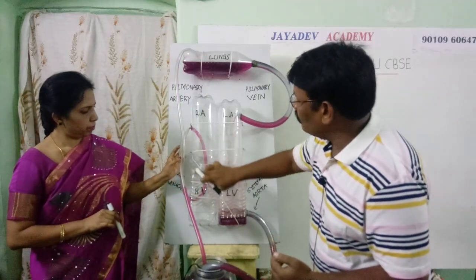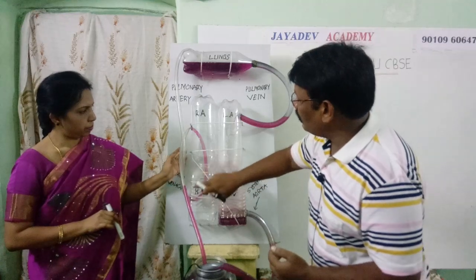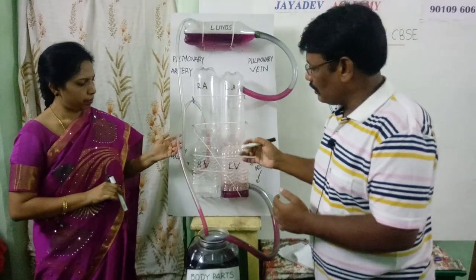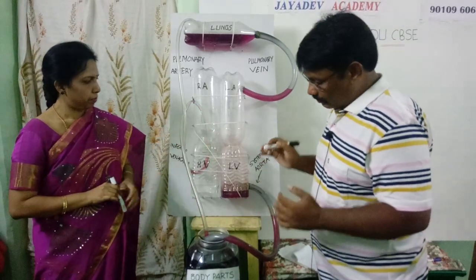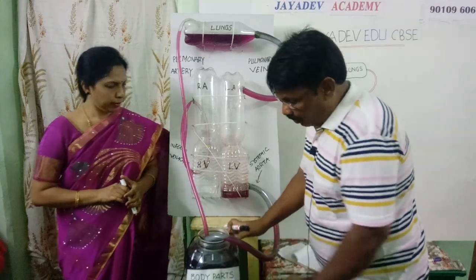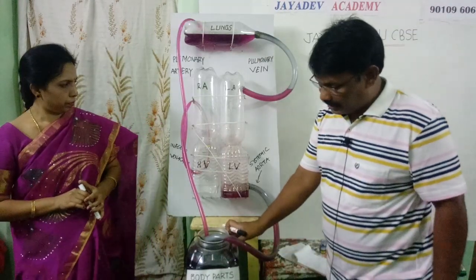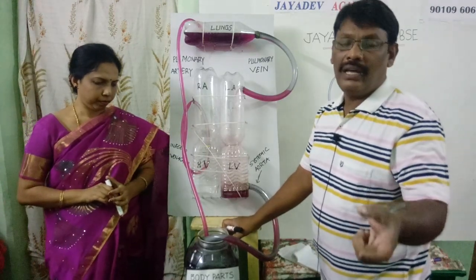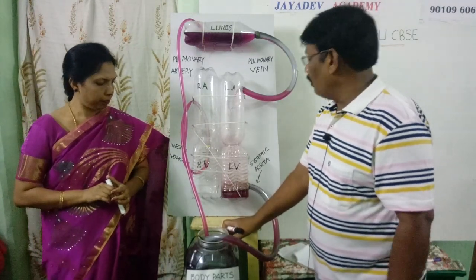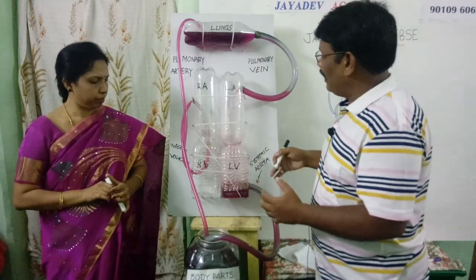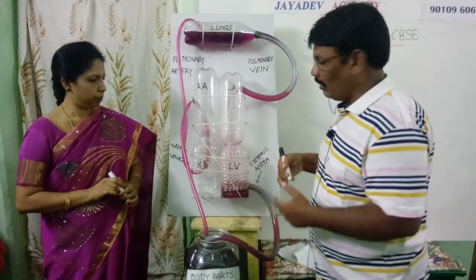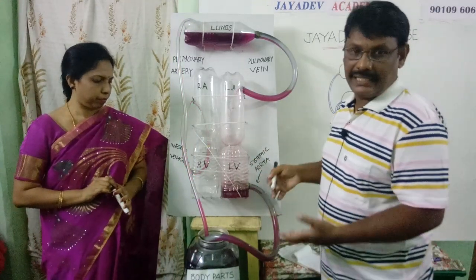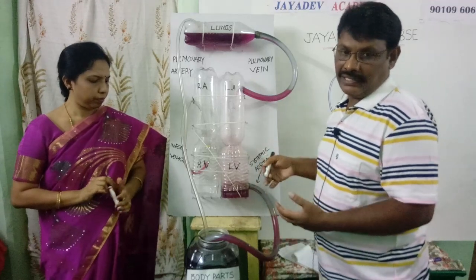So we can easily observe and visibly see the passage of this water, or blood. We can identify the passage of the blood. This bottle represents the body parts, and we are taking one big bottle containing water mixed with KMnO4, potassium permanganate. This fabulous and wonderful working model is provided by our team. I think you can understand this working model of human circulatory system.